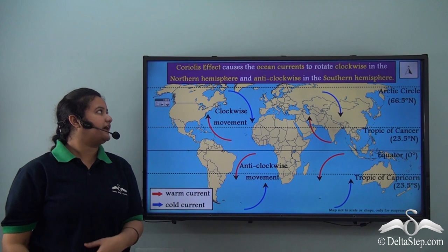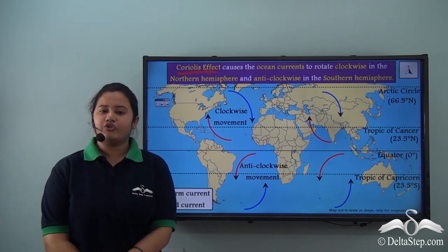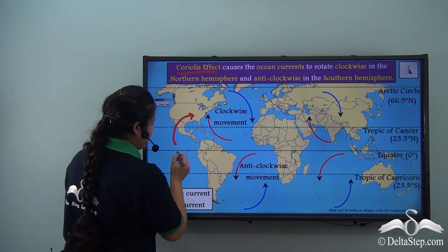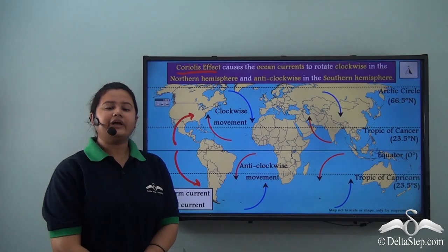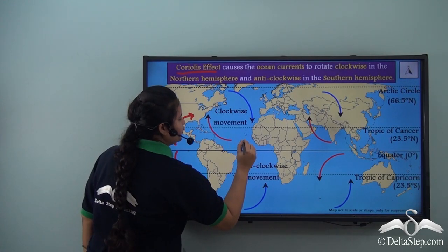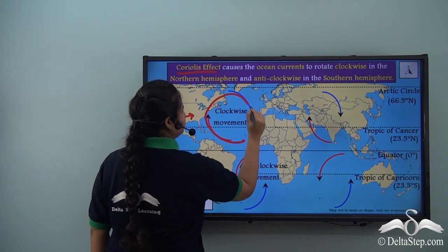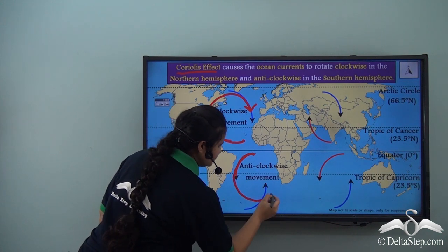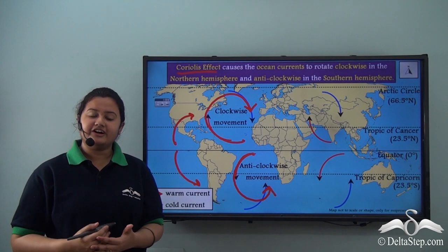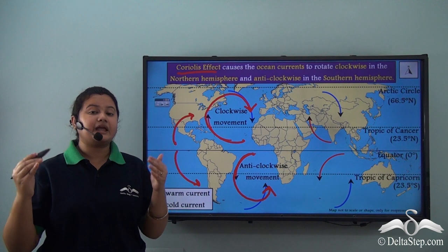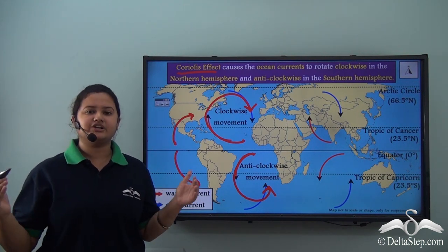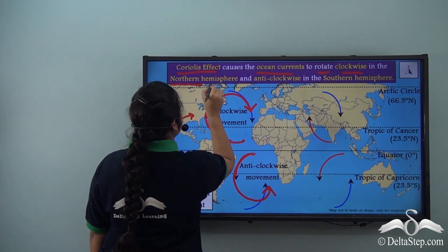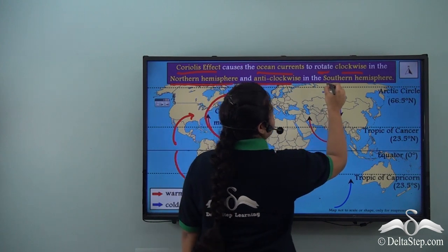Due to the Coriolis effect, the direction of ocean currents are changing — deflecting to the right in the northern hemisphere and to the left in the southern hemisphere. In the broader view, the ocean currents follow a clockwise pattern in the northern hemisphere whereas they follow an anti-clockwise pattern in the southern hemisphere. So earth's rotation is an important factor which affects the movement of ocean currents: they rotate clockwise in the northern hemisphere and anti-clockwise in the southern hemisphere.